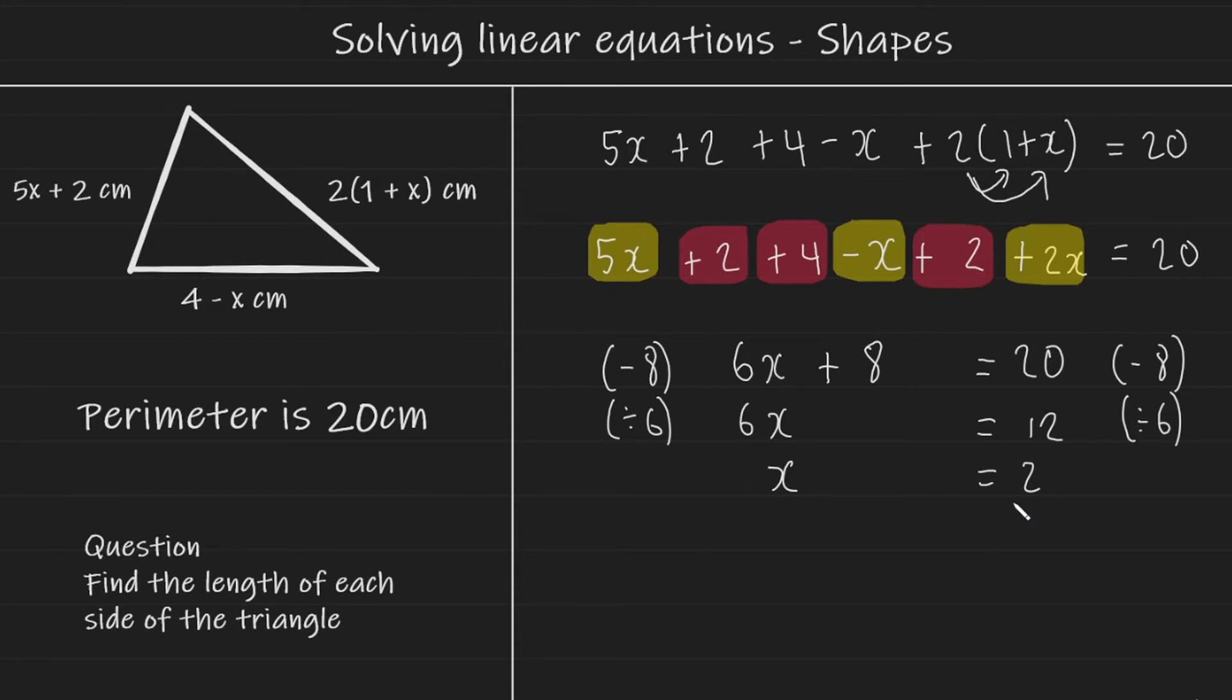Now we haven't finished the question here. We've only found out what x is equal to. The question originally asked us to find the length of each side of the triangle. And we can do this by substituting 2 into the expressions for the sides of the triangle. So let's do that with the first one, 5x plus 2.